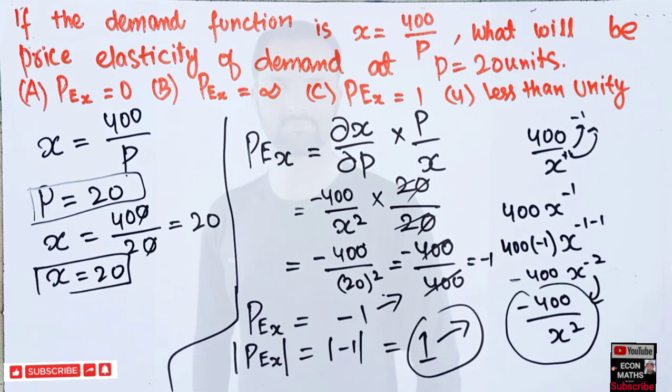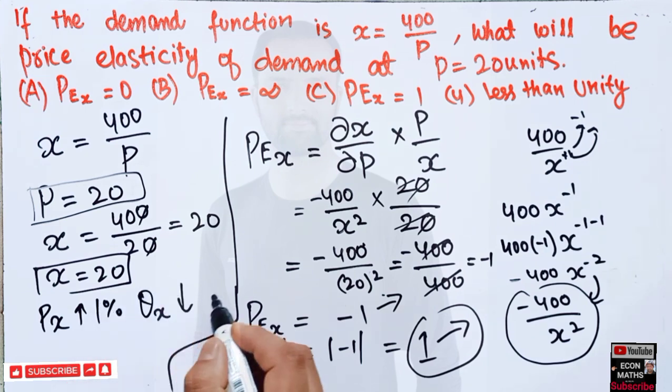And how do we interpret this? That means if price of x increases by, let's say, 1%, quantity demanded of x will decrease by 1%. So there is a one-to-one negative relationship between price and quantity demanded. I hope I make myself clear in this video. Thank you.